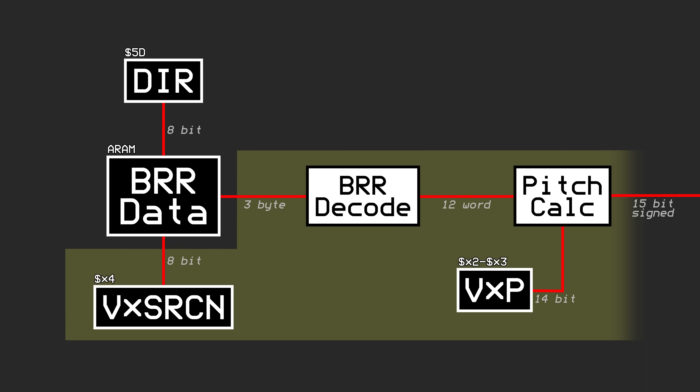Everything shown so far was explained more in depth in the previous video in this series, so please check that out if you're interested in the details. There is one thing left out of the previous video, which is the endX register. The X at the end of this register's name denotes that it is an output register, meaning that the DSP writes to it under normal operation, and any software can read its value to learn some information about what the DSP is currently doing. The DSP writes a bit to the endX register if it has reached the end of the currently playing BRR sample — either at the end of a sample that doesn't loop, or after a sample has started to loop for the first time. The endX register consists of 8 bits, one bit for each voice. These flags could be used to check if a sample has finished playing without having to know how long the sample was in advance.